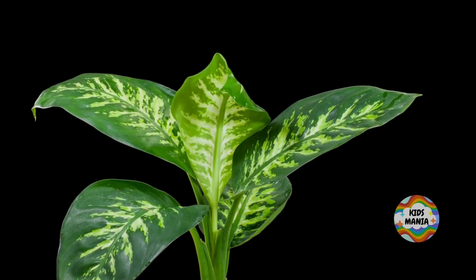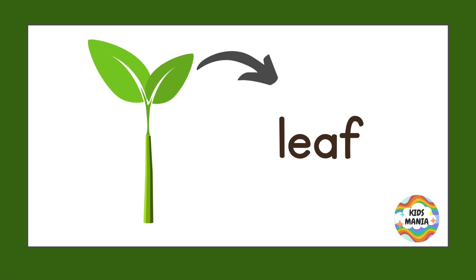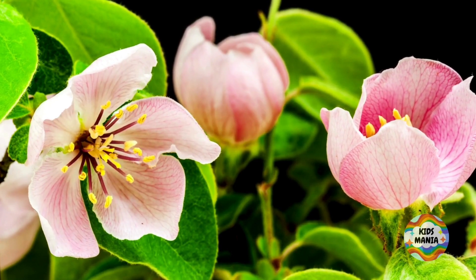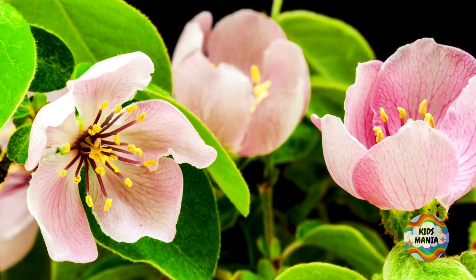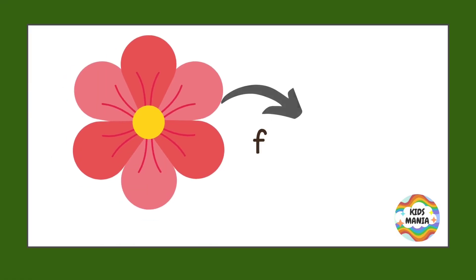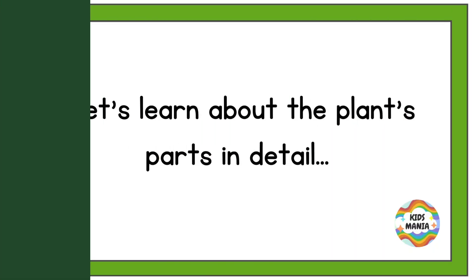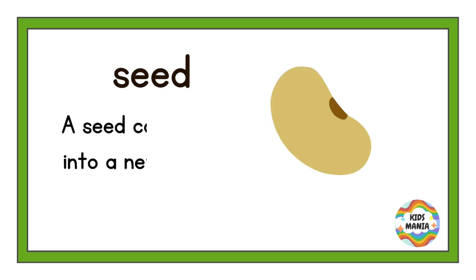This is the stem — it grows up through the soil. This is a growing leaf. How beautiful is that leaf! This is a leaf. Now here you can see the blossoming flowers — exquisite! This is the flower.